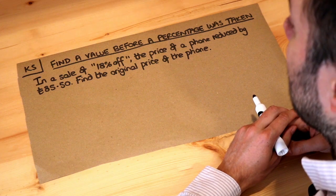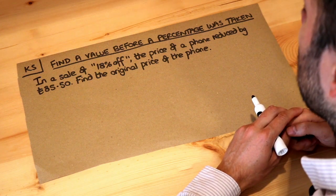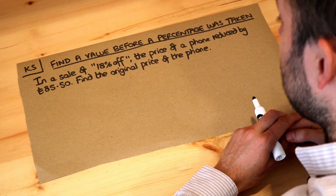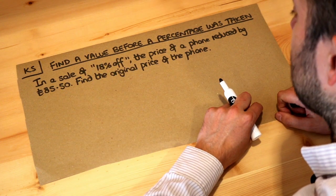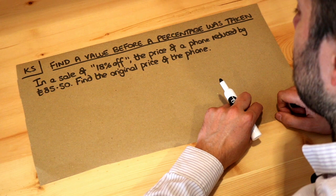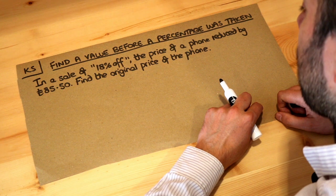Hello and welcome to this Dr. Ross Mass's key skill video on finding a value before a percentage was taken. Now in a sale of 18% off, the price of a phone reduced by £85.50. Find the original price of the phone.